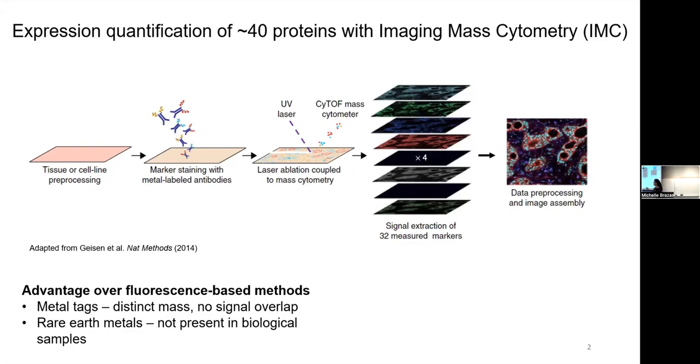Another point here is that these metal tags correspond to rare earth metals that despite their name are actually quite abundant in the earth's crust, but they're so-called because they're not present in biological material and therefore you also don't get that autofluorescence issue that you do with fluorophores.